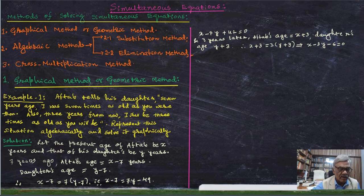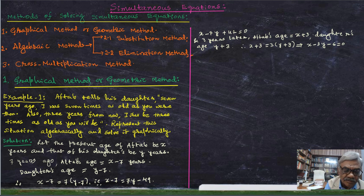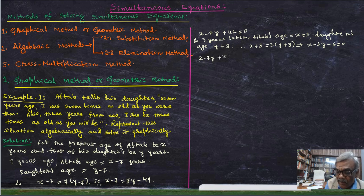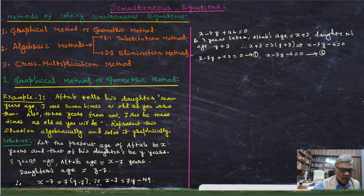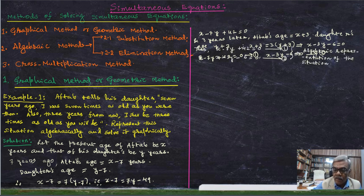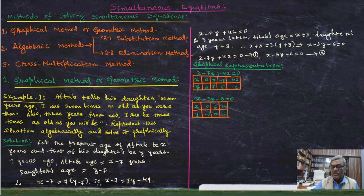We now have two equations: equation 1 is X minus 7Y plus 42 equals 0, and equation 2 is X minus 3Y minus 6 equals 0. Now we will consider the graphical representation of these two equations.